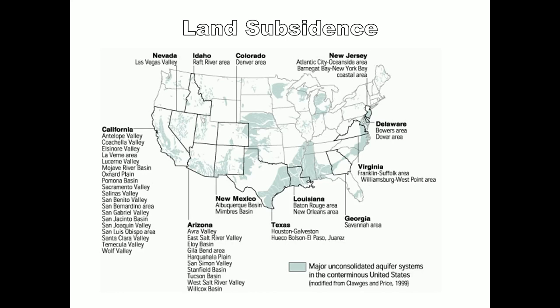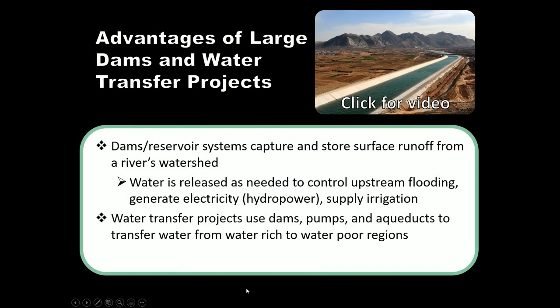We need a way to get water to water-parched areas that doesn't involve over-pumping groundwater. One solution is large water transfer projects: we build an artificial river that takes water from mountains where there's more precipitation, captures it in a reservoir, and lets it fall downhill through a concrete-lined channel to supplement the water supply of cities below. If we have a dam, we can also use it for hydroelectric energy, control upstream flooding, and increase the irrigation supply — this is how cities like those in Nevada get water when built in a desert.